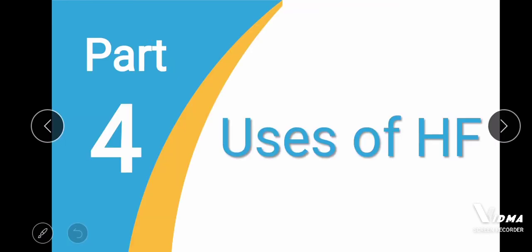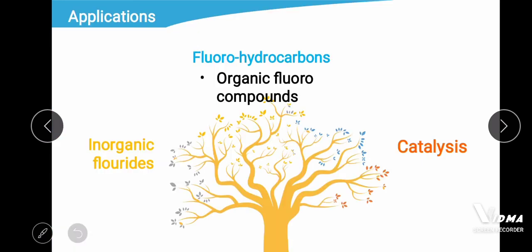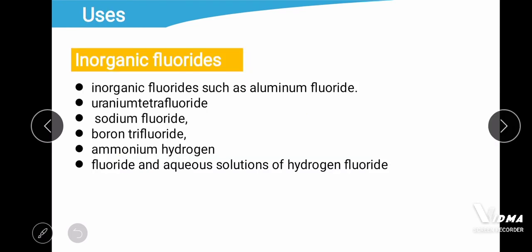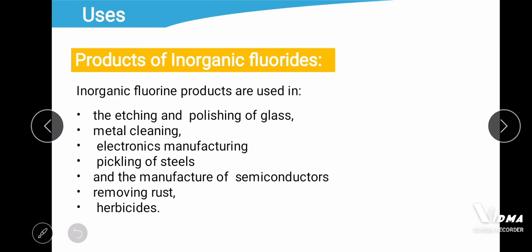The last part covers the uses of hydrofluoric acid. HF is used in the formation of inorganic fluorides, in the formation of fluorohydrocarbons, and as a catalyst. For inorganic fluorides: compounds such as aluminium fluoride, uranium tetrafluoride, sodium fluoride, boron trifluoride, and ammonium hydrogen fluoride are obtained using hydrogen fluoride. These inorganic fluorides are then used in etching and polishing of glass, metal cleaning, electronics manufacturing, pickling of steels, manufacturing of semiconductors, removing rust, and herbicides.